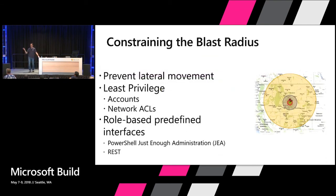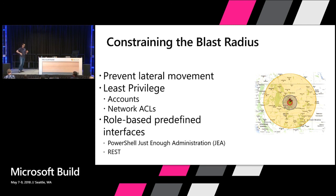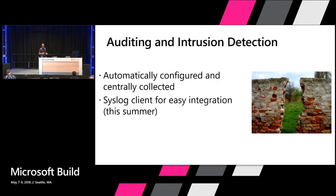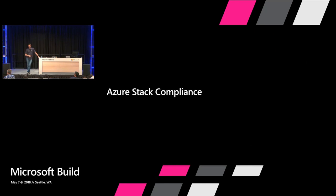We contain blast radius by least privilege at the account level. All components communicate either through REST or PowerShell JEA. If one component gets compromised, they cannot make WMI calls or perform arbitrary actions. If an account is compromised, there is no logging into Hyper-V Manager, Cluster Manager, or Server Manager — only those three endpoints. For auditing, we centrally collect all audits and pre-configure Azure Stack to provide everything you need. We have a syslog client we're delivering next month that will make it very simple to integrate any monitoring platform on the market.